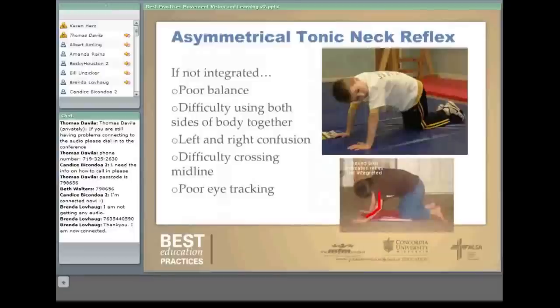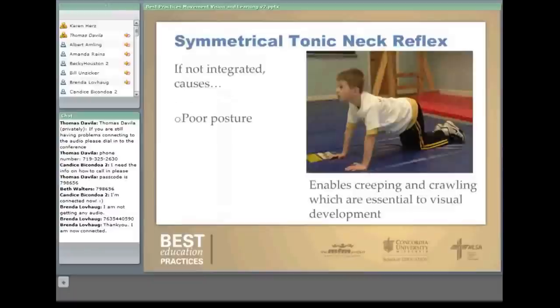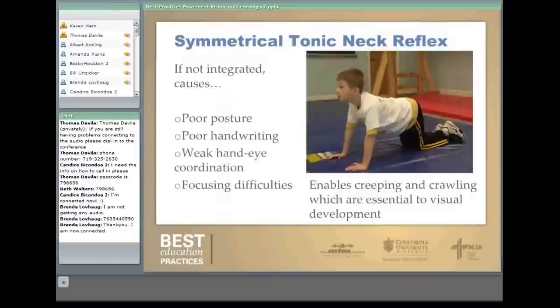The symmetrical tonic neck reflex — called the giraffe or golden retriever — if not integrated, may show as poor posture, poor handwriting, weak hand-eye coordination, and focusing difficulties. This reflex enables creeping and crawling, which are absolutely essential to vision development. The exercise is simply rocking back and forth with weight on arms about ten times.